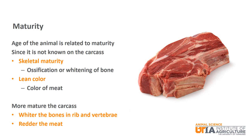Maturity is a measure of the relative age of the carcass, or the age that the animal was when it was harvested. Since most of the time this is not known with a given carcass, skeletal maturity and lean color are used to estimate maturity. Skeletal maturity looks at the ossification or whitening of the bones, while lean color looks at the color of the meat. A more mature carcass will have whiter looking bones and redder looking meat.